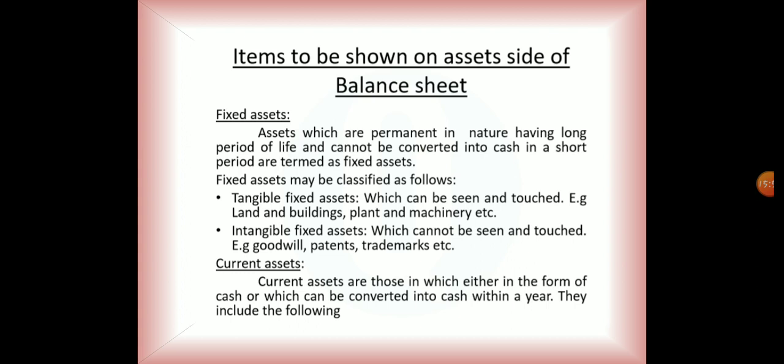On the asset side, first are fixed assets — long-term assets which cannot be converted into cash in a short period of time. Fixed assets are classified into two types: tangible fixed assets, which can be seen and touched, such as land, buildings, plant and machinery; and intangible fixed assets, such as goodwill, patents, and trademarks, which cannot be seen and touched.